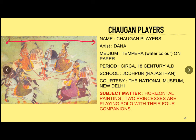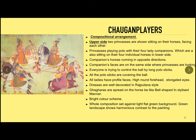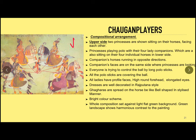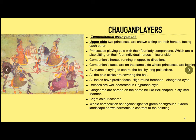Subject matter: it is a horizontal painting where two princesses are playing polo with their four companions. In the upper section, two princesses are shown sitting on their horses, facing each other. The background of the painting is almost flat. Two princesses are playing polo with their four lady companions, who are also sitting on their individual horses in the lower section. The lady companions' horses are in the opposite direction, but the lady companions' faces are in the same direction as the princesses' faces.